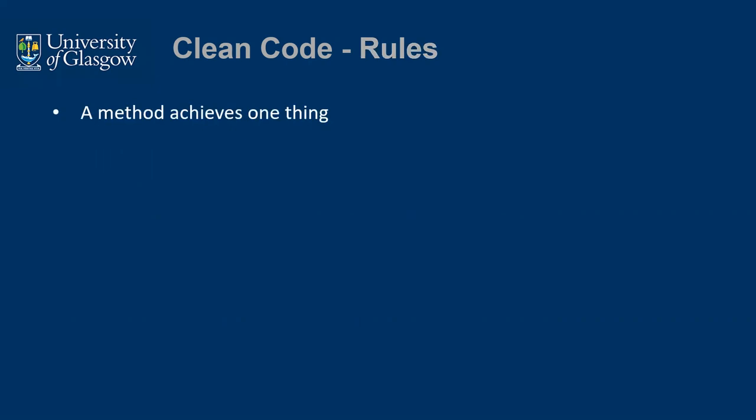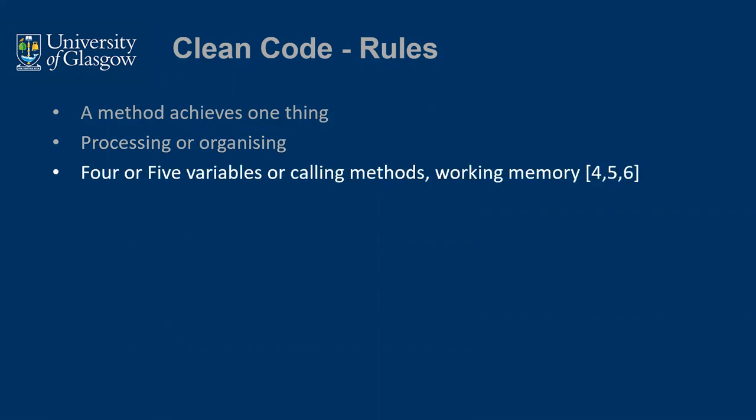A method should only achieve one thing. You don't want to be doing too much in a method — it should either achieve one thing or be a process-organizing method that calls other methods. And if you're achieving one thing, try to only have a maximum of about four to five variables. Or if you're an organizing method, only call about four to five methods.